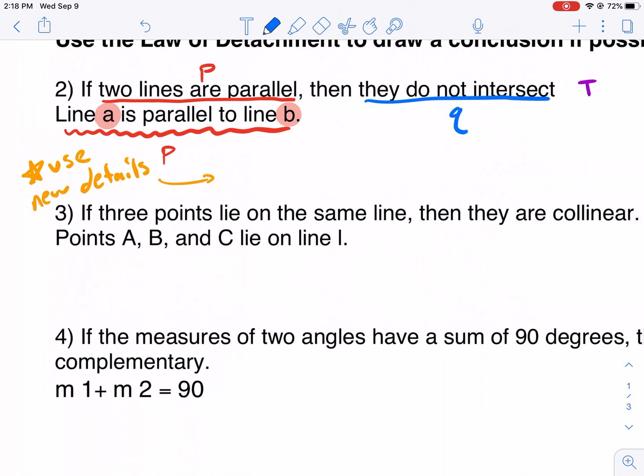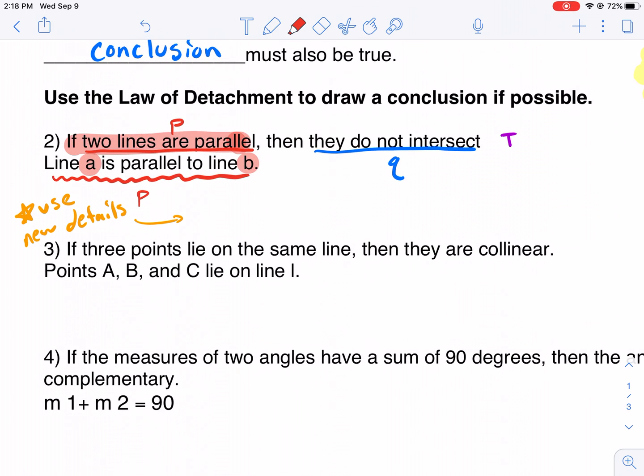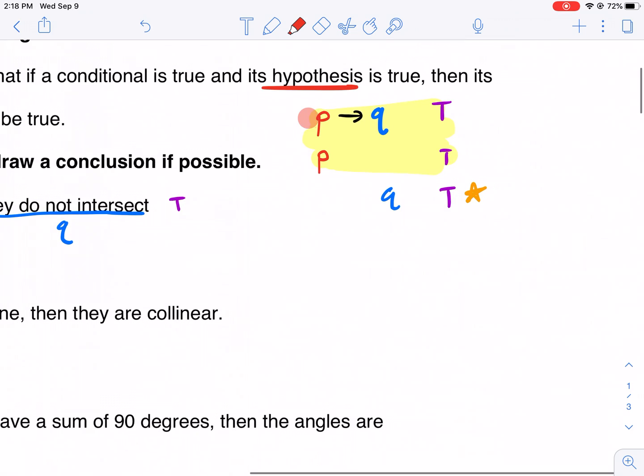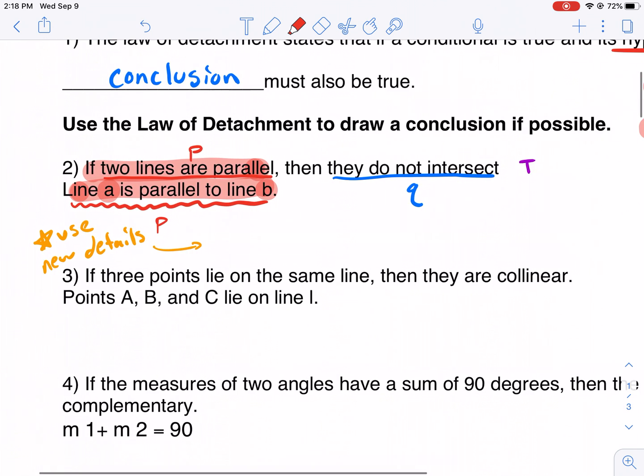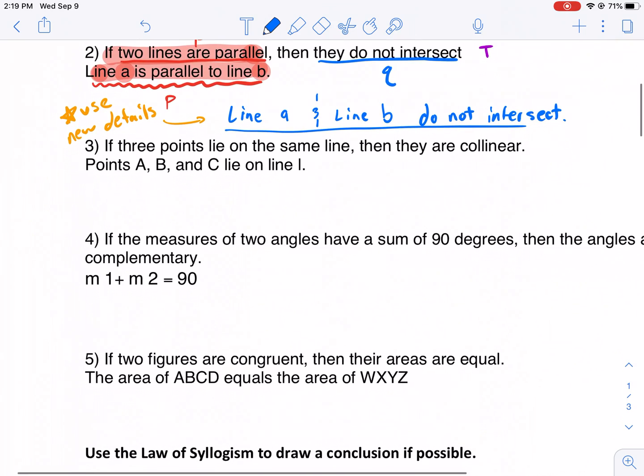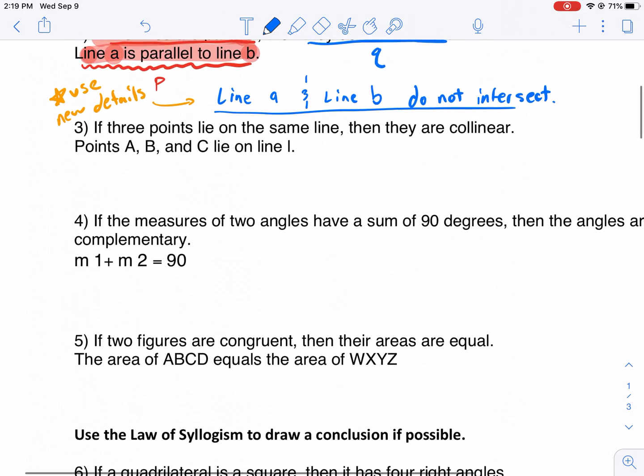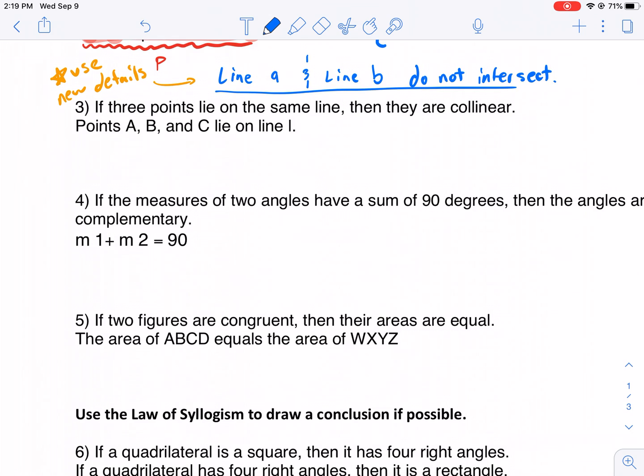Now we can form a conclusion using those details. So make sure you use the new details in your conclusion. And it's very important that these two things, the hypothesis in the original conditional and the new hypothesis, these need to match. They need to both be true and they need to be saying the same thing in a matter of words. So now we can form a true conclusion. The first conclusion was they do not intersect. We're going to restate the conclusion using the new details. So we're going to say line A and line B do not intersect. See how I'm saying the same thing, but I'm just giving it a little bit more clarity. Same sentence, same framework as the conditional, but I'm just giving it a little bit more detail that I provided in the second hypothesis. Let's proceed.